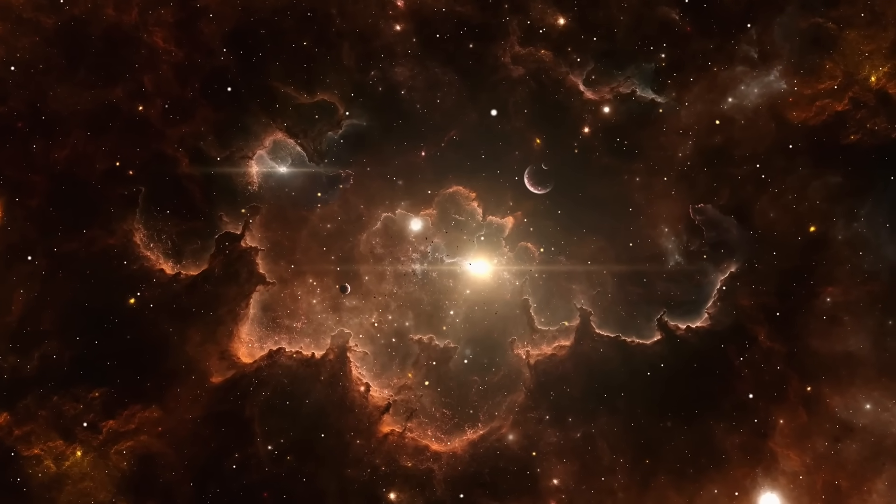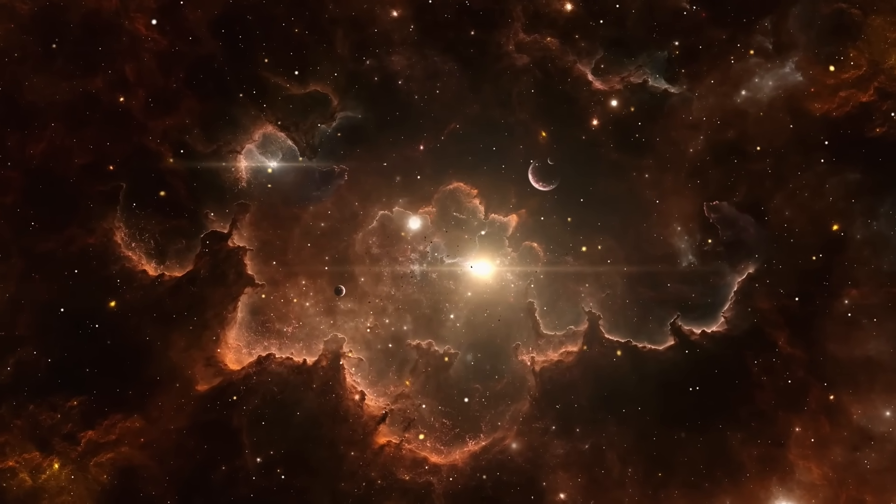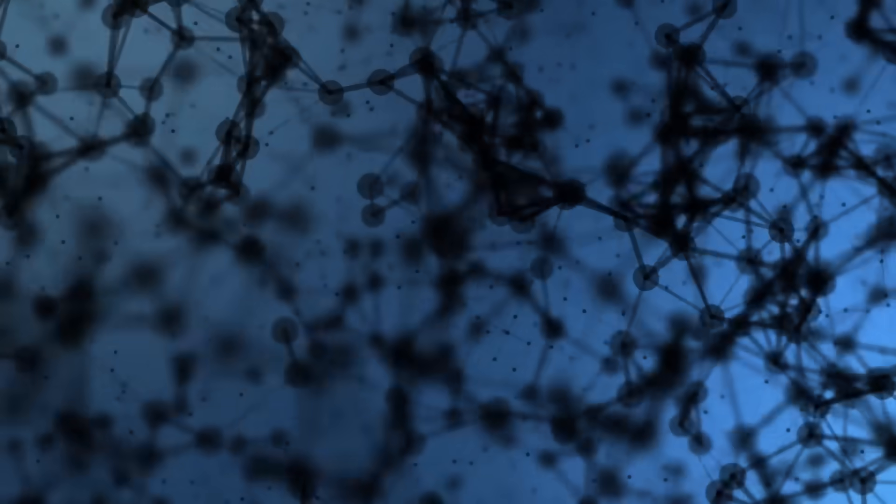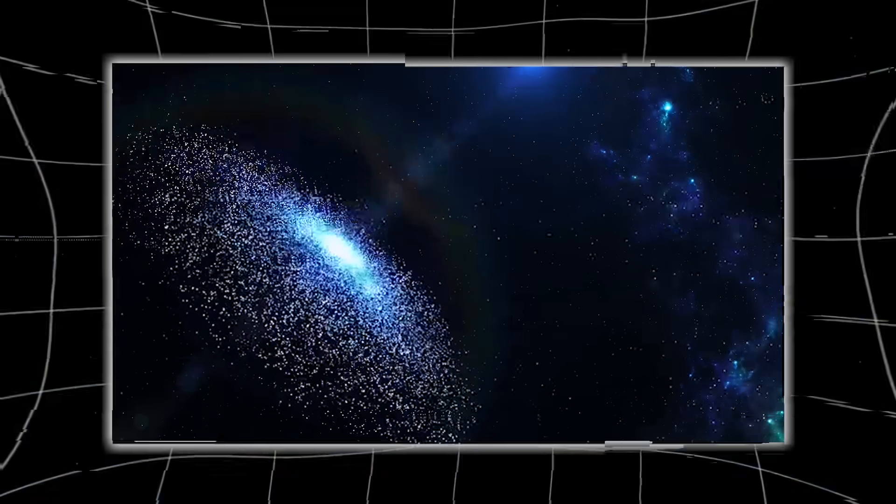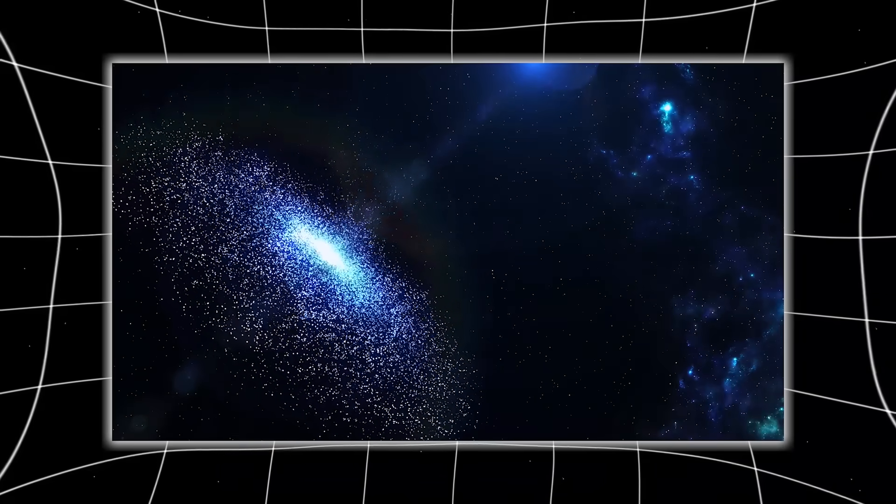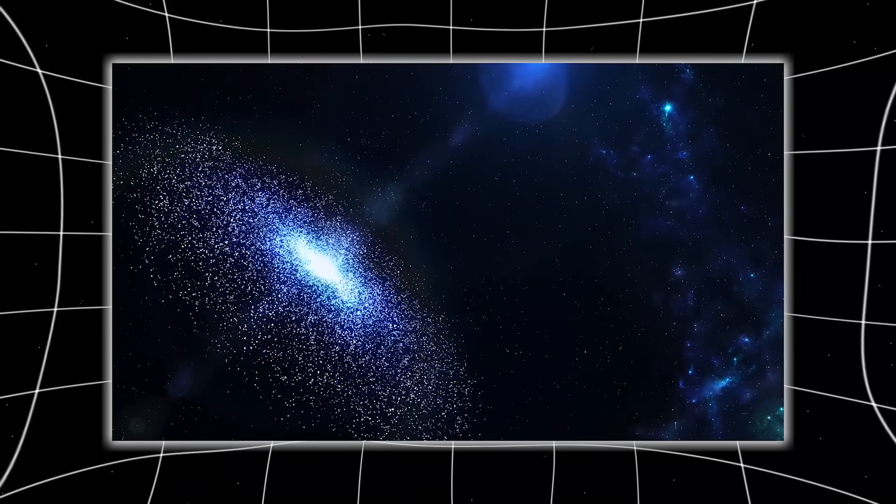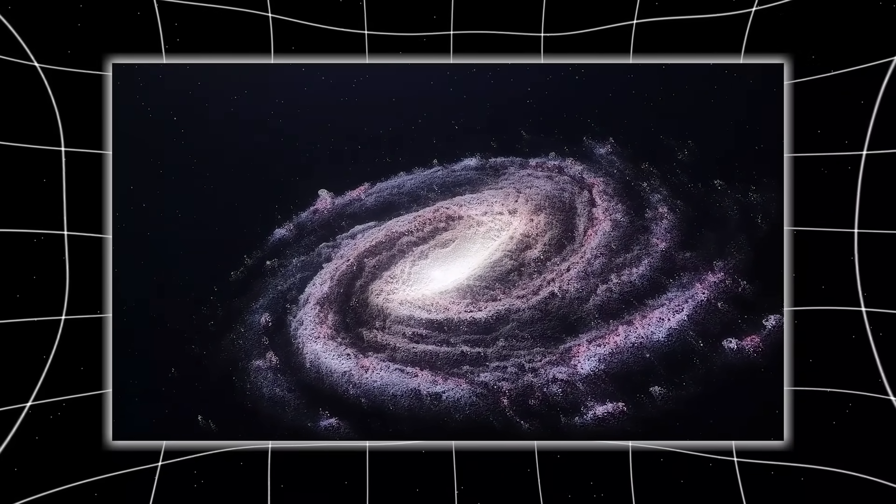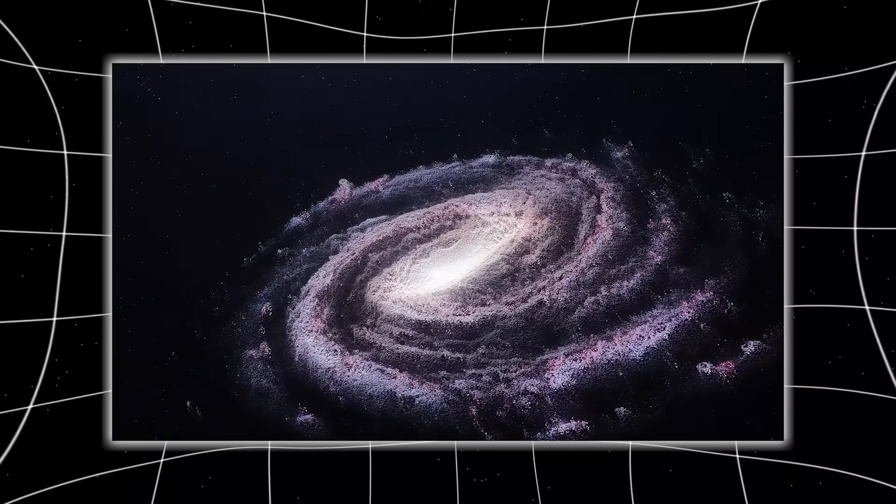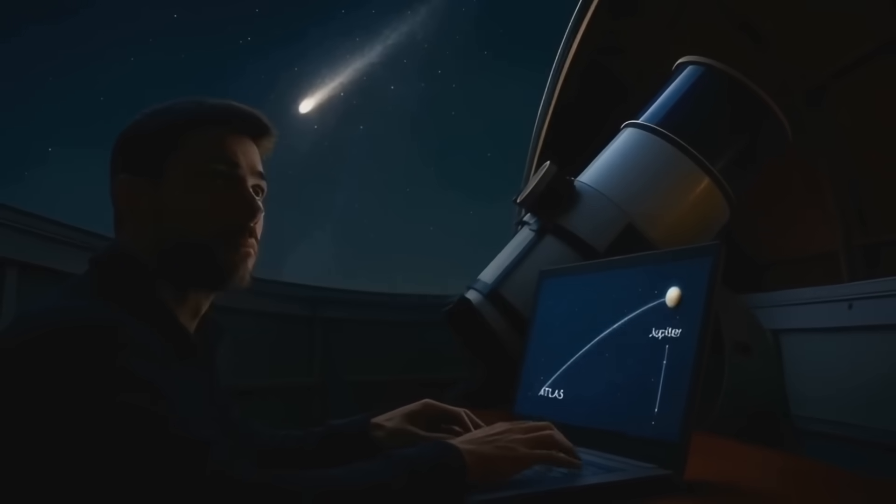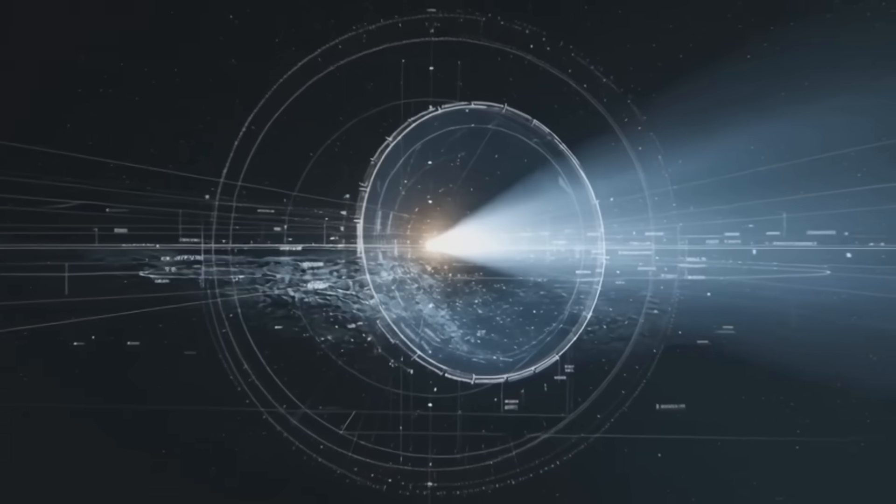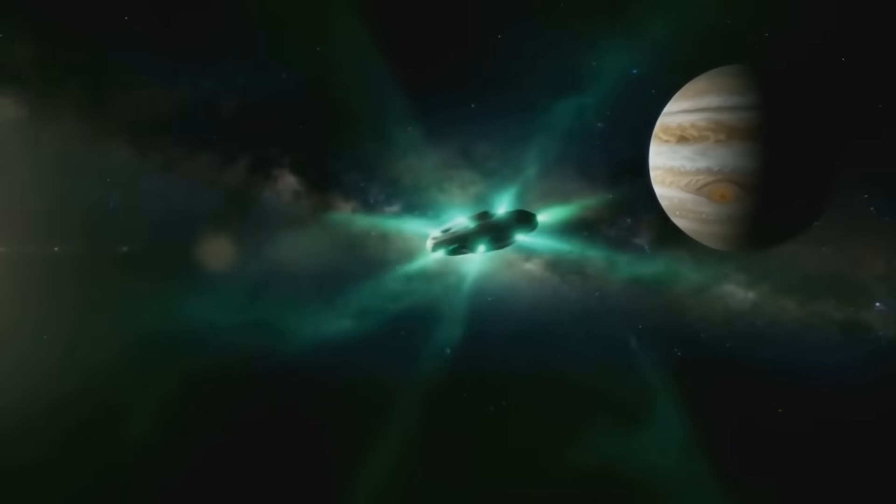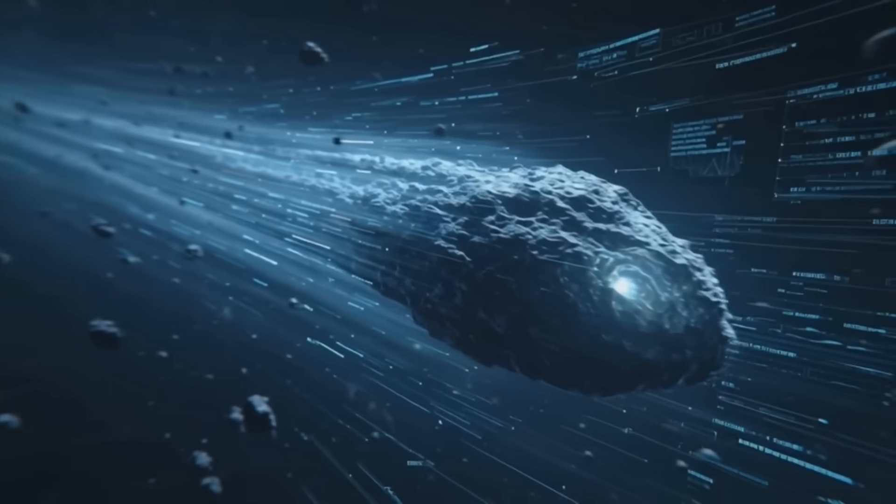This red to blue jump isn't just pretty, it indicates a unique chemical composition, possibly containing materials rarely seen in solar system comets. When an object comes from another star system, its chemistry carries fingerprints of the disk of gas and dust that once surrounded its parent sun. A shift this dramatic suggests 3i Atlas isn't just interstellar by trajectory, it's interstellar by molecular identity. The press conference barely mentioned this, but Ray's analysis shows it should have been the headline.